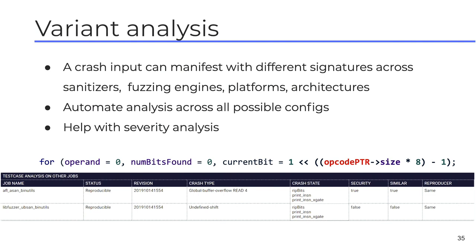Some of our most useful features came from developer requests. One of them we call variant analysis. Once a developer gets a crash from a particular build configuration, they find it really hard to manually create all the possible build configurations just to understand the crash signature. A simple and important use case: a developer gets a crash from a release build and wants to reproduce it in a debug build to see if it triggered any assertion, which can point to the root cause and severity. We do that automatically. Configurations can include various sanitizers like ASAN, MSAN, UBSAN, different platforms, and architectures like 32-bit, 64-bit, ARM, and x86.